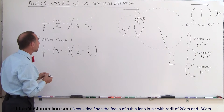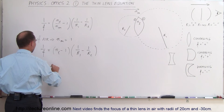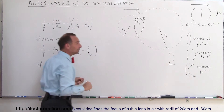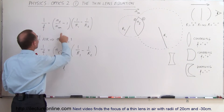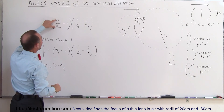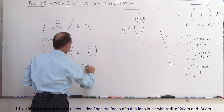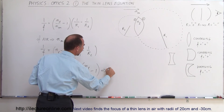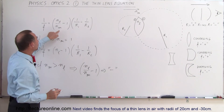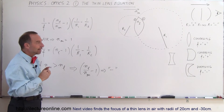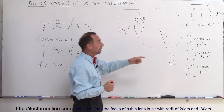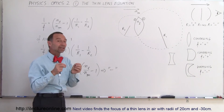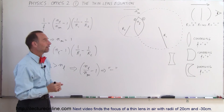What happens if N_M is greater than N_L — that is, the index of refraction of the medium around the lens is greater than that of the lens itself? There are some special cases where this can occur. If N_L is smaller than N_M, that ratio will be less than 1, meaning N_L over N_M minus 1 becomes a negative quantity. This reverses the lens: a lens that normally would be converging will now act like a diverging lens, and vice versa. So be careful of that.